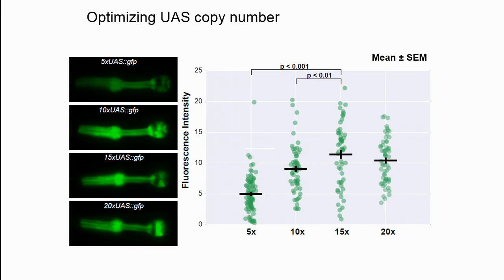Next, we looked at UAS copy number — we tested 5, 10, 15, and 20 copies. With more copies, there's a successive increase in gene expression up until about 15, and then it seems to saturate. So we decided to use 15 copies of UAS for our system.